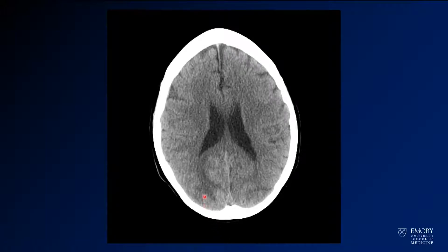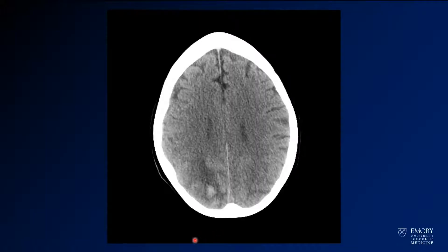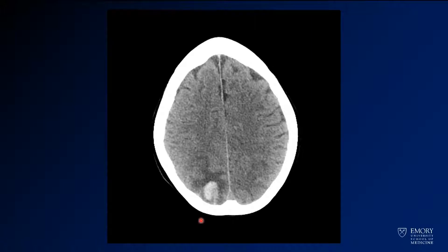What you start to see is a little bit of hypointensity in the posterior lobes. Getting up a little higher, you have some areas of hyperintensity, kind of centrally located within that low density — so some hemorrhage with some surrounding edema.